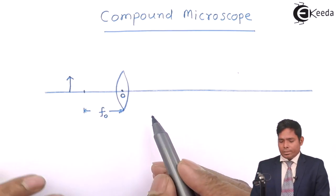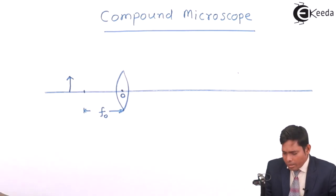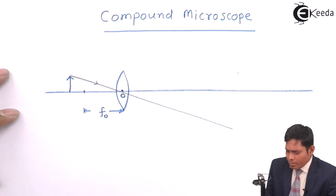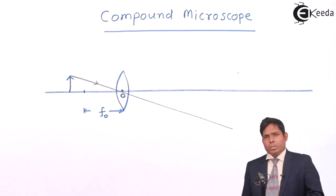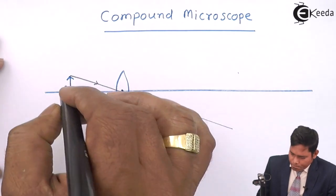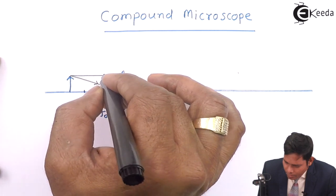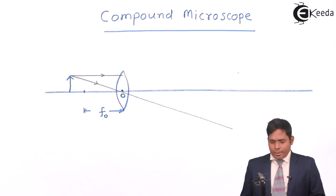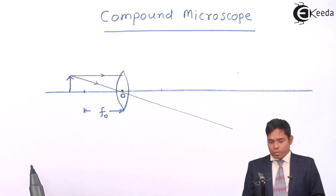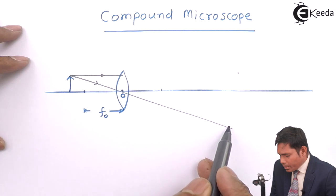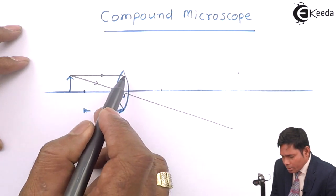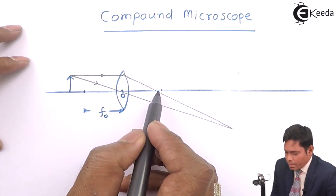With the object placed beyond the focal length, I consider two rays. One ray passes through the optical center and goes straight without deviation. The second ray travels parallel to the principal axis and then passes through the focus on the other side. I'll adjust the focal length in the diagram to keep things manageable. These two rays meet on the other side to form the image.